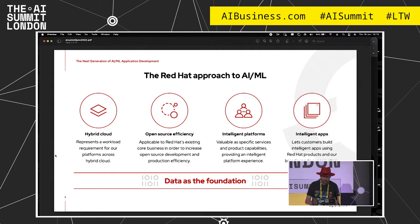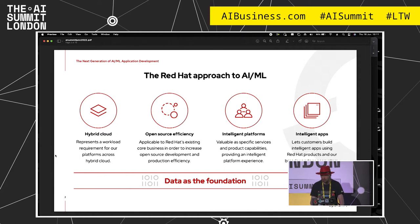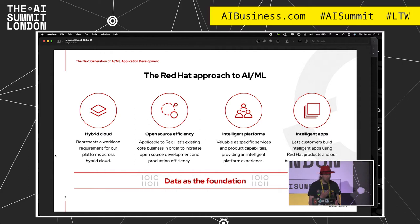And finally, intelligent apps — letting customers build intelligent apps using Red Hat products. This is very important to me because I was a developer for 35 years. I came up against what I call the 70-30 problem: I was spending 70% of my time building machines, downloading frameworks, installing frameworks, and configuring tools — and only 30% of my time actually writing software. That's hideously inefficient. What we're trying to move towards is providing tools and technologies that bring that up to 90 or 95% of your time writing code.